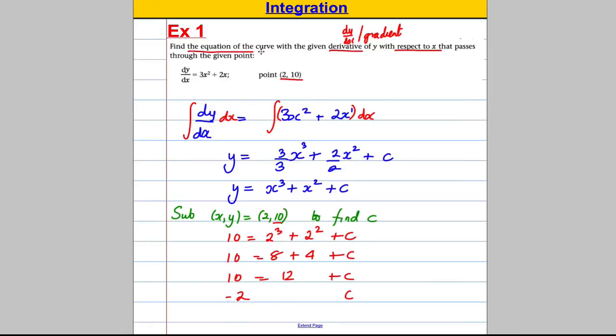And it says find the equation of the curve, so we must restate our curve, which was this, but with the c we found. Therefore, as our final answer, we must write y equals x cubed plus x squared, and the c we've now found its value, take away 2. And that is the thing we highlight for the examiner, and there's our final answer. That's example 1 done.